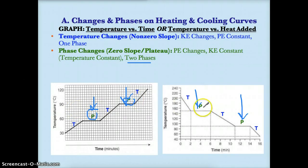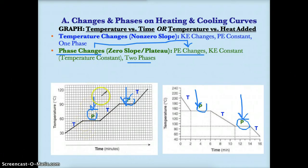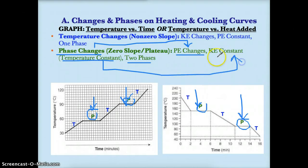So the basic thing to know about these flat lines or green P's: these four flat lines or zero slopes mean phase changes. Since the phase is changing, the potential energy is also changing, since potential energy is related to phase. The temperature on the y-axis is constant or not changing, so the kinetic energy is constant as well. Since a phase change is occurring at these four green P regions, you have two phases present.